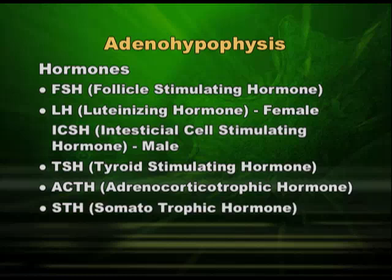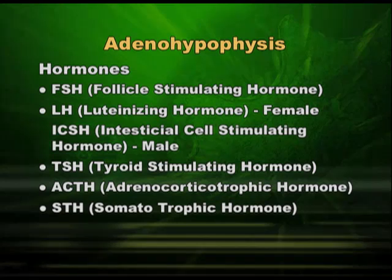The fifth hormone is the growth hormone, or STH, somatotrophic hormone. As the name indicates, it acts on each and every somatic cell in our body and hence helps in the growth of the body, which is why it is also called the growth hormone. For these five hormones — FSH, LH or ICSH, TSH, ACTH, and STH or growth hormone — we have releasing factors in the hypothalamus.